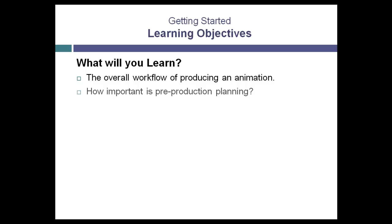Pre-production planning is a very important aspect of the overall process of 3D animation production. During this phase of the process, sketches are created for the client, so the client is able to sign off on the project prior to any production work. This sketch is called a storyboard. It outlines just what is expected of the animation so that everyone understands what the final product should look like.